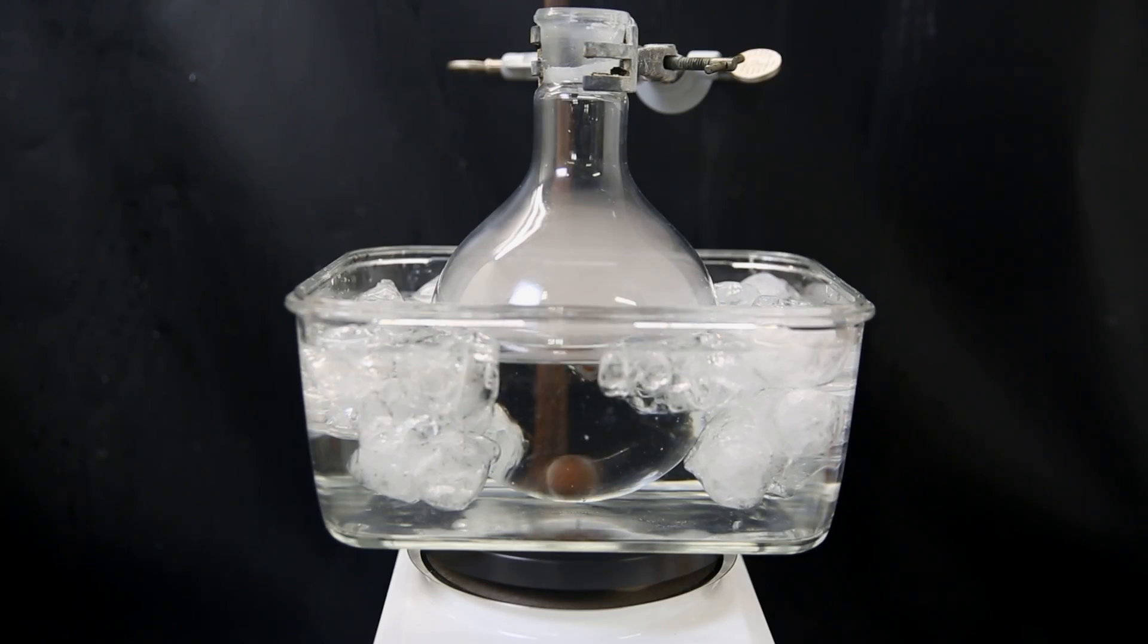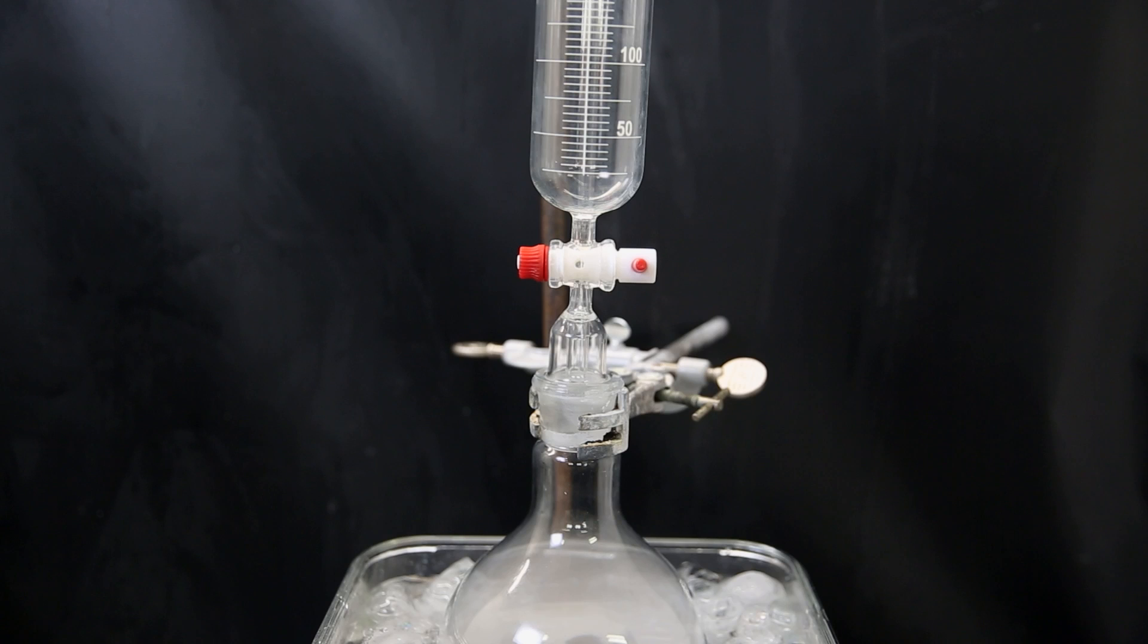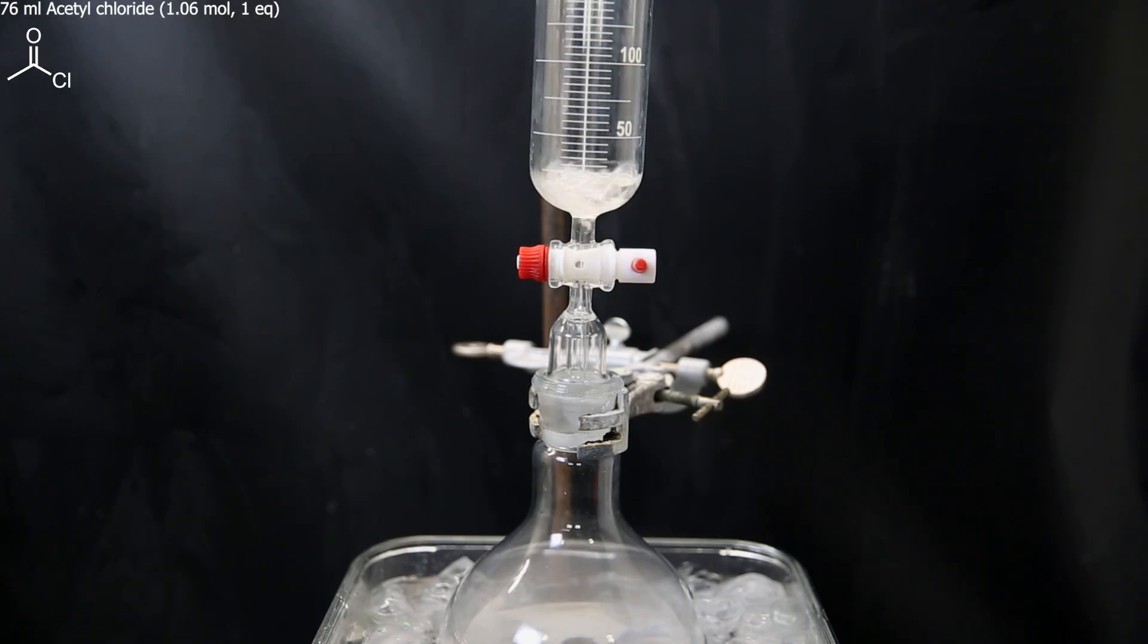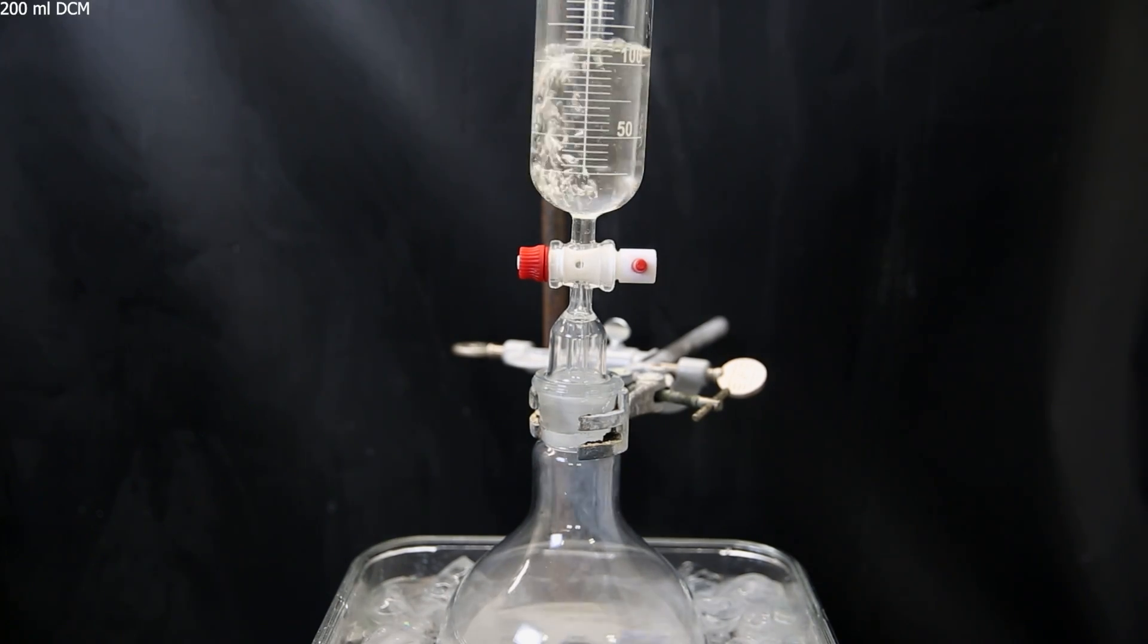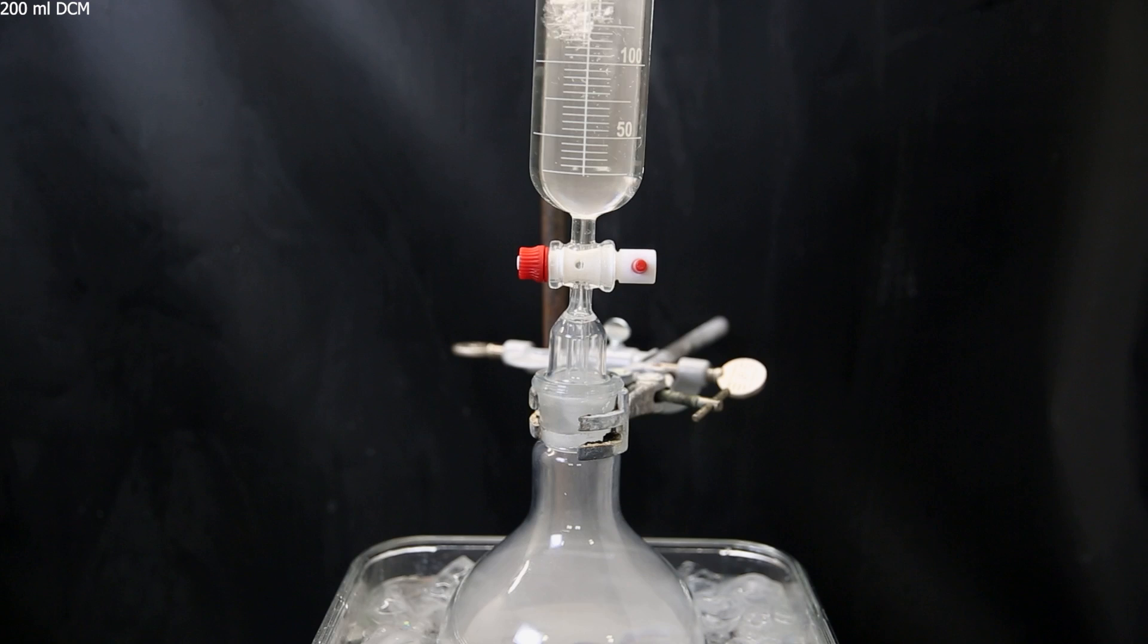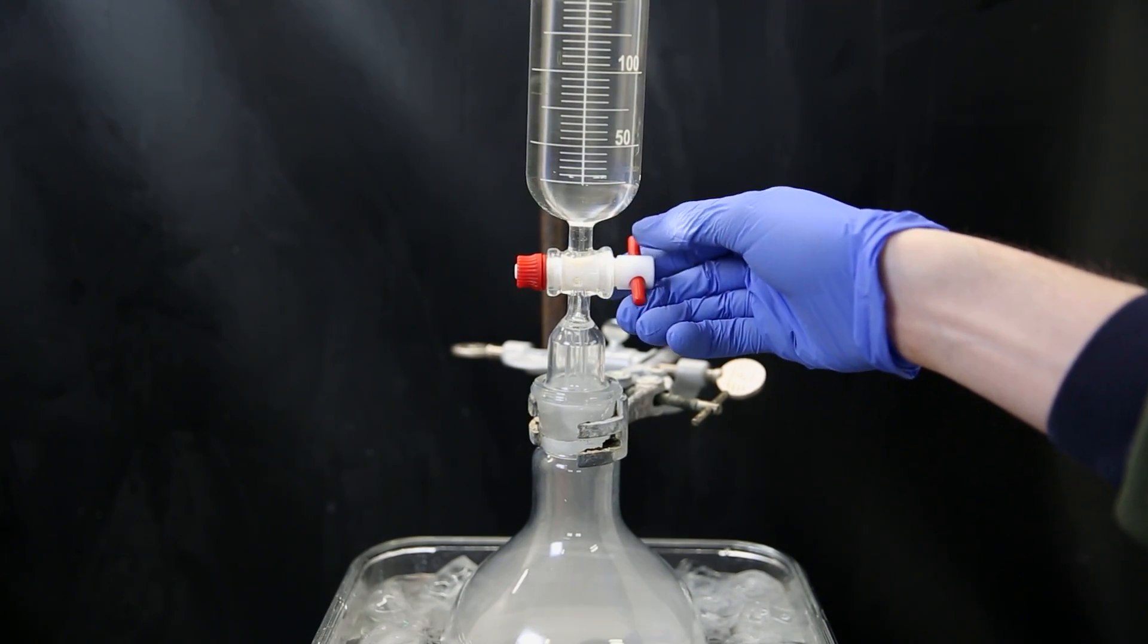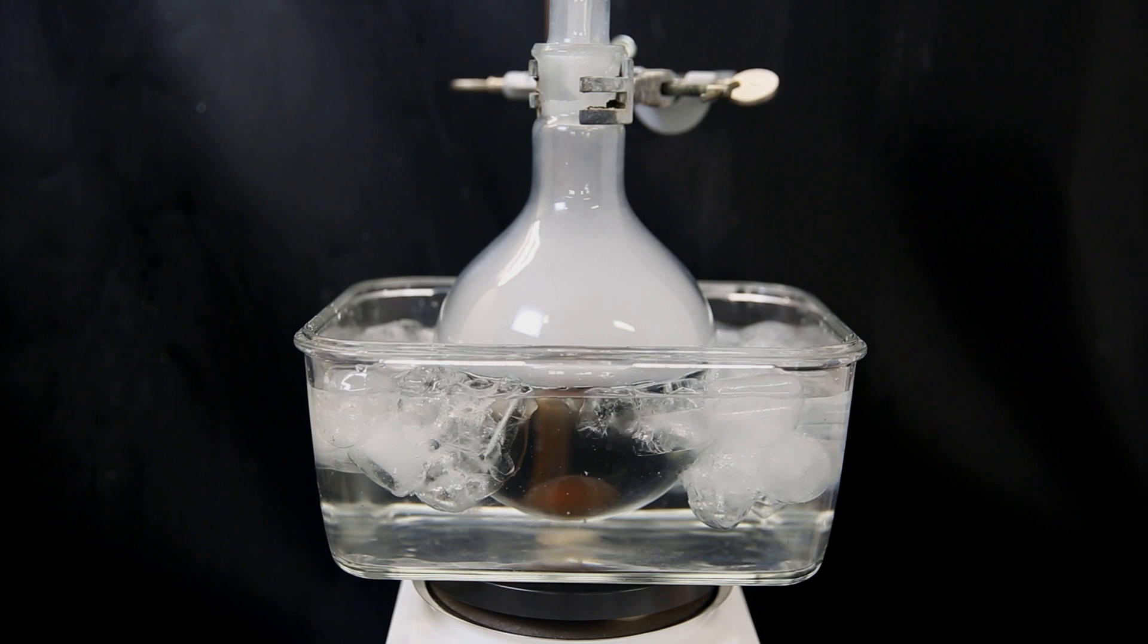I then set the flask in an ice bath and on top I add a dropping funnel. To this, I add 76 ml of acetyl chloride as the second reagent. I then add 200 ml of DCM in two portions to dissolve and dilute it. Now, I drop ice add the acetyl chloride to the flask while stirring it in the ice bath, because the reaction is exothermic.